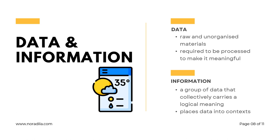Information maps out the data to provide a big picture view on the data. An example of information is a set of data of temperature readings in several locations in Kedah over several years. Without any additional context, the temperatures have no meaning. However, when analysed, organised, and interpreted, the temperature patterns and trends can be determined, and the data is now providing information that is beneficial.